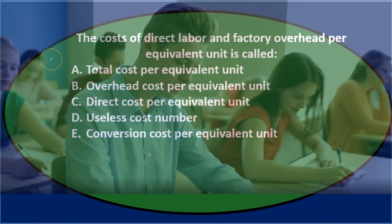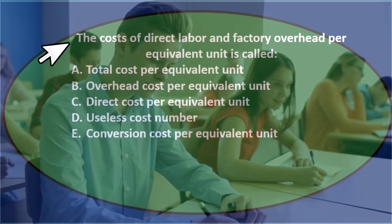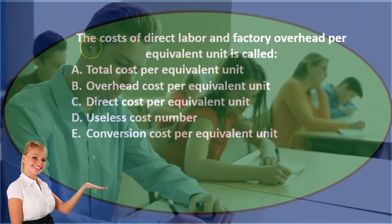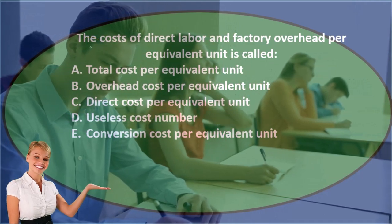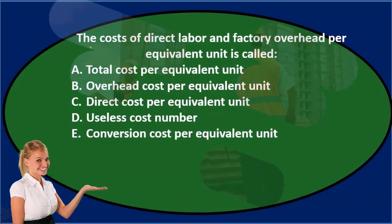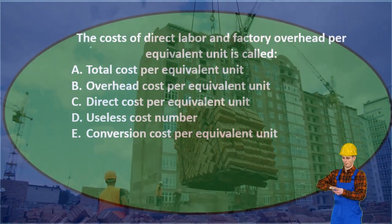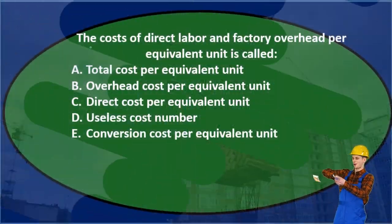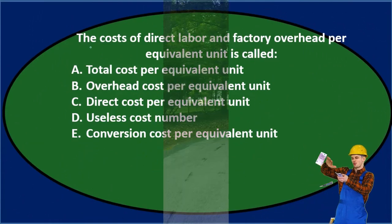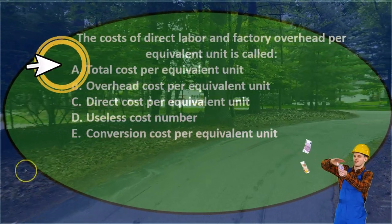The costs of direct labor and factory overhead per equivalent unit — so we have direct labor and overhead. When we think about the cost of inventory we typically have material, labor, and overhead. Here we're combining labor and overhead, so we might think: what do those two have in common that materials possibly does not?